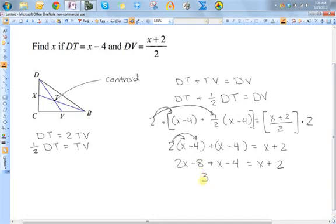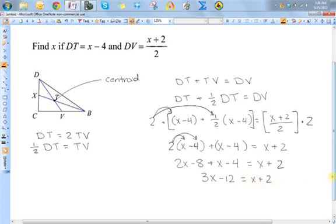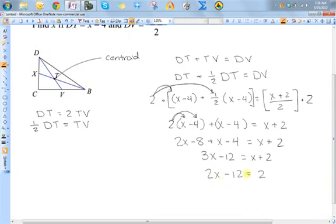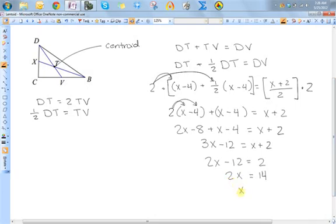So 3x minus 12 equals x plus 2. Let's subtract x from both sides, giving me 2x minus 12 equals 2. Now, let's add 12 to both sides, so I get 2x is equal to 14. And if I divide both sides by 2, I will get x is equal to 7.